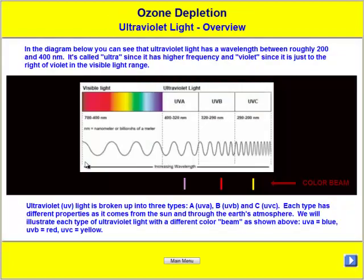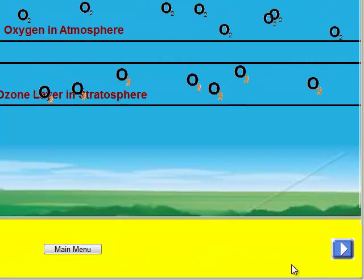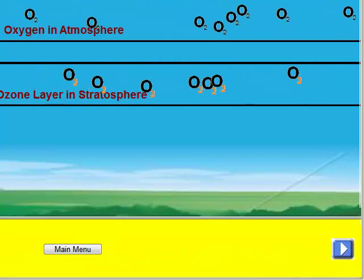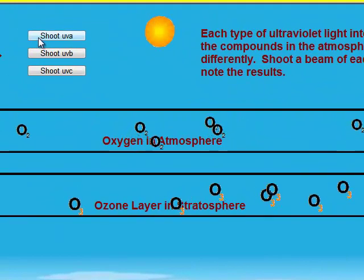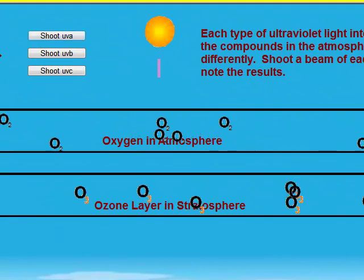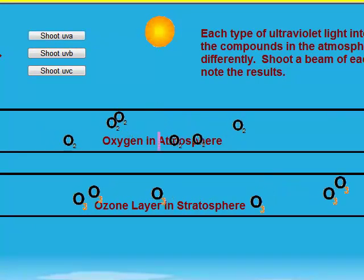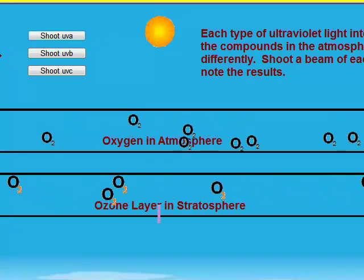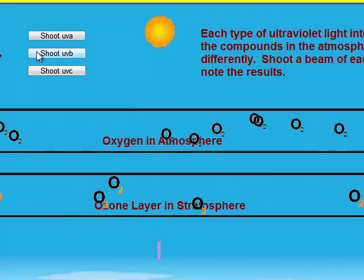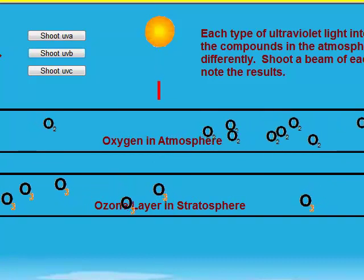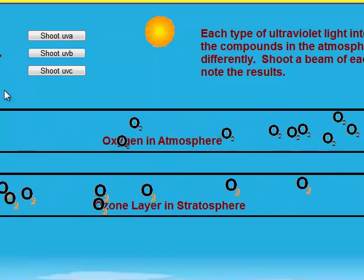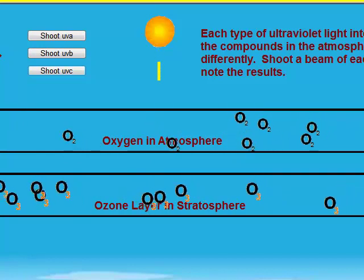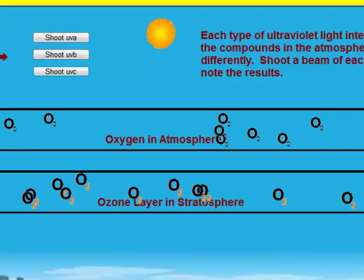First of all, the software will go through the various types of ultraviolet radiation and illustrate how some forms of ultraviolet go through all the layers in the atmosphere, and how some others do not.